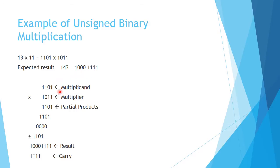Our multiplicand is 1101 and our multiplier is 1011. We take the rightmost, least significant bit of the multiplier and multiply the multiplicand by that bit, which is 1. So 1 times 1 is 1, 1 times 0 is 0, 1 times 1 is 1, 1 times 1 is 1 — giving us 1101 as our first partial product.